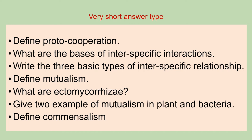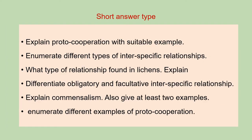Next is: define commensalism. The next category of questions are short answer type questions, which you have to answer in a single paragraph. The first question of this category is: explain proto-cooperation with a suitable example. Next is: enumerate different types of inter-specific relationships. Next is: what type of relationship is found in lichens.